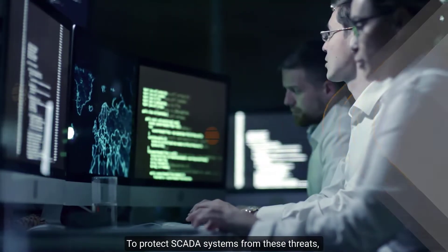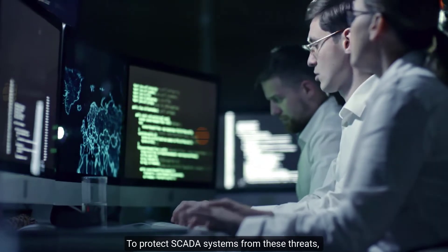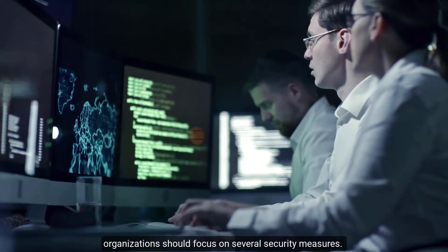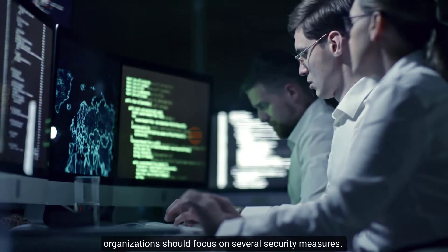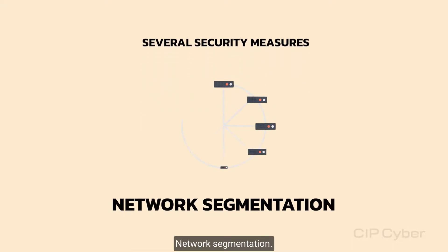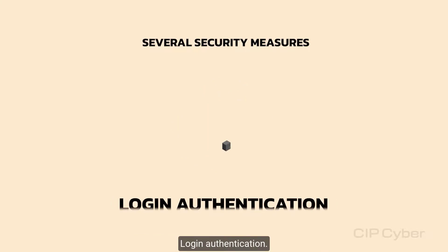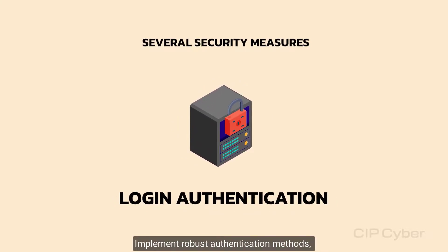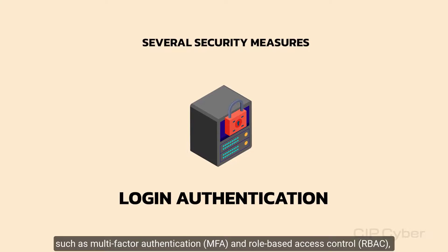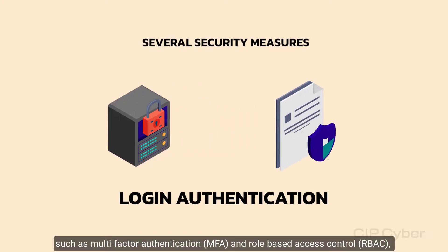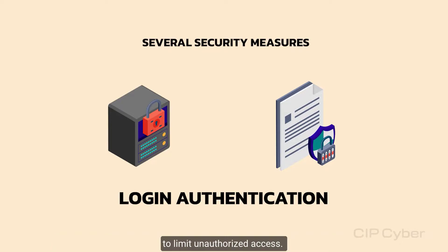To protect SCADA systems from these threats, organizations should focus on several security measures. Network segmentation: isolate SCADA networks from corporate networks and the internet using firewalls and DMZs. Login authentication: implement robust authentication methods such as multi-factor authentication and role-based access control to limit unauthorized access.